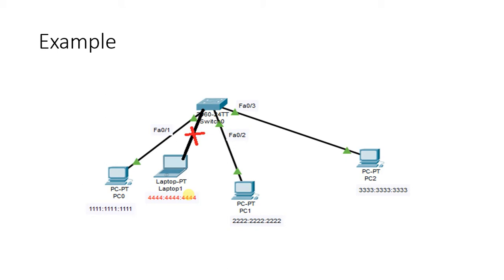The MAC address is the unique identity — it is the hardware address hard-coded on the network interface card, unique for each and every PC. The strategy we will use to secure our port is: we will allow the port to remember the MAC address of the connected PC. If you want to allow 10 computers, this port will learn those 10 MAC addresses and allow only those machines. Any other device with a different MAC address will not be able to enter the network.